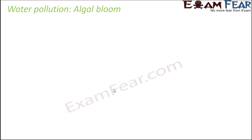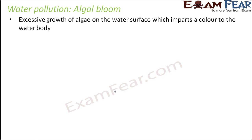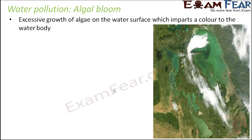When talking about water pollution, algal bloom needs attention. Algal bloom is the excessive growth of algae on the water surface, which imparts a color to the water body. Have you ever seen a green grass-like layer on the surface of a pond or lake? Whenever you see lakes and ponds, check if you come across one with a green carpet-like layer on its surface — that is nothing but algae. This algal bloom generally occurs in freshwater or marine water bodies, and the discoloration happens due to high density of the pigmented cells of the algae.